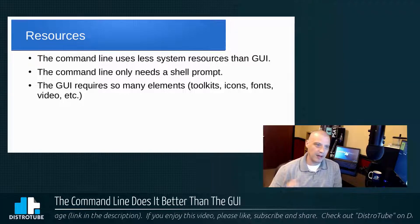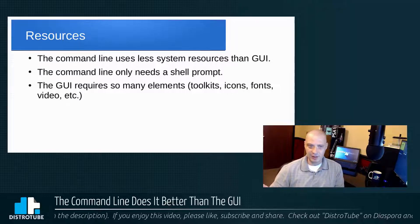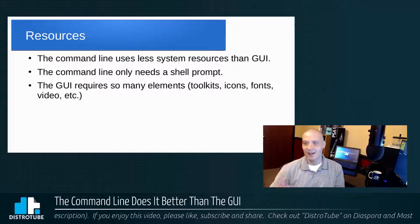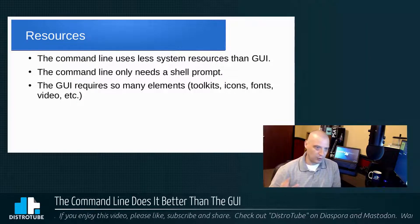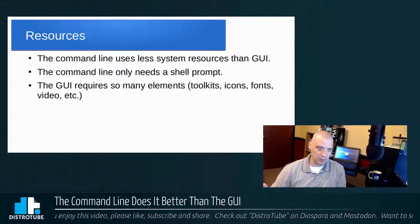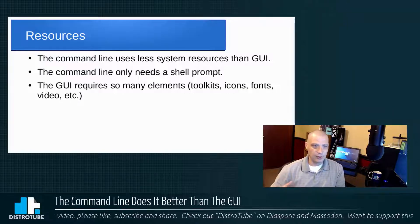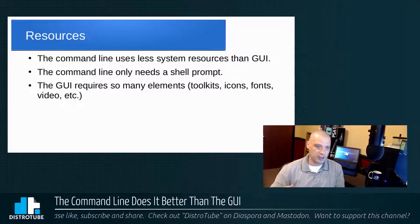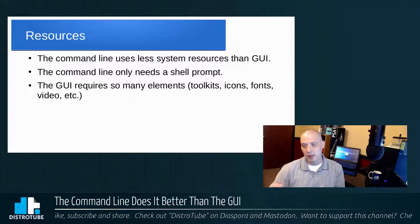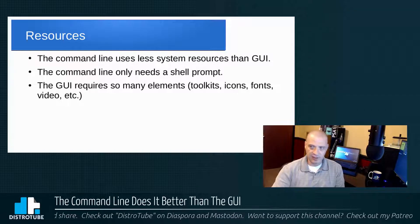Resource usage is another advantage. The command line uses less system resources than a graphical user interface — this is obvious. All you need is a shell prompt. On the desktop you need a terminal emulator, but other than that you don't need toolkits like GTK or Qt, you don't need icons, fonts, video, or any of that stuff that sucks up all your system resources. All you need is a command prompt.